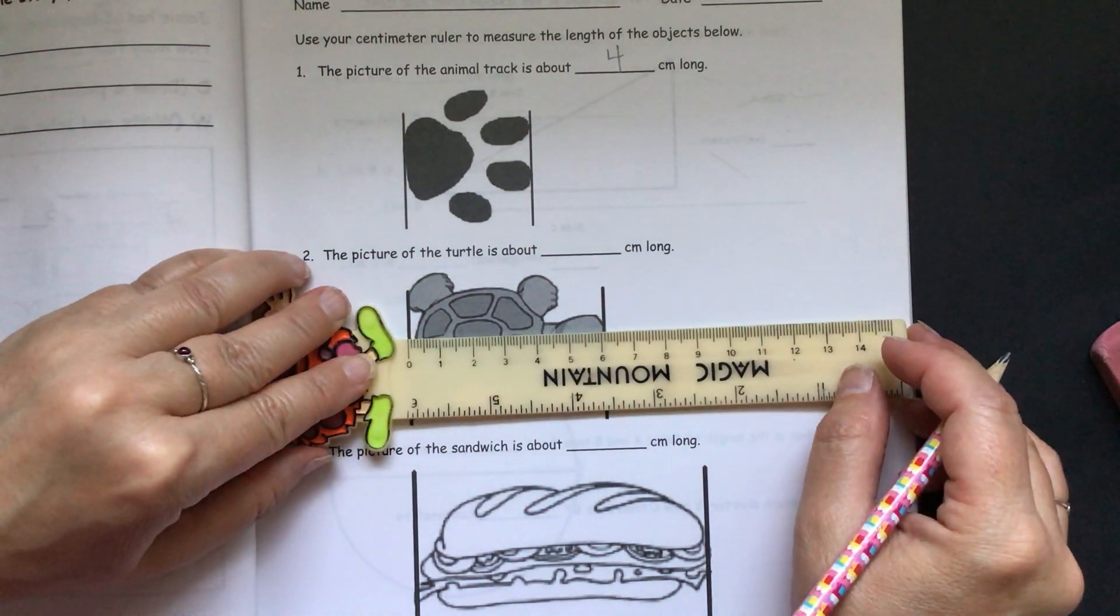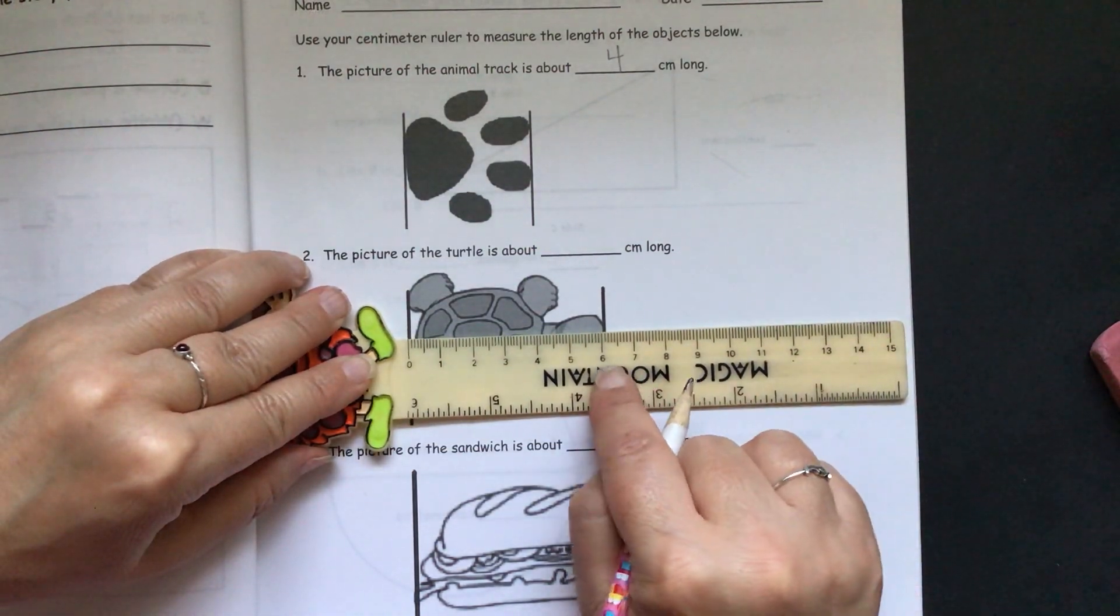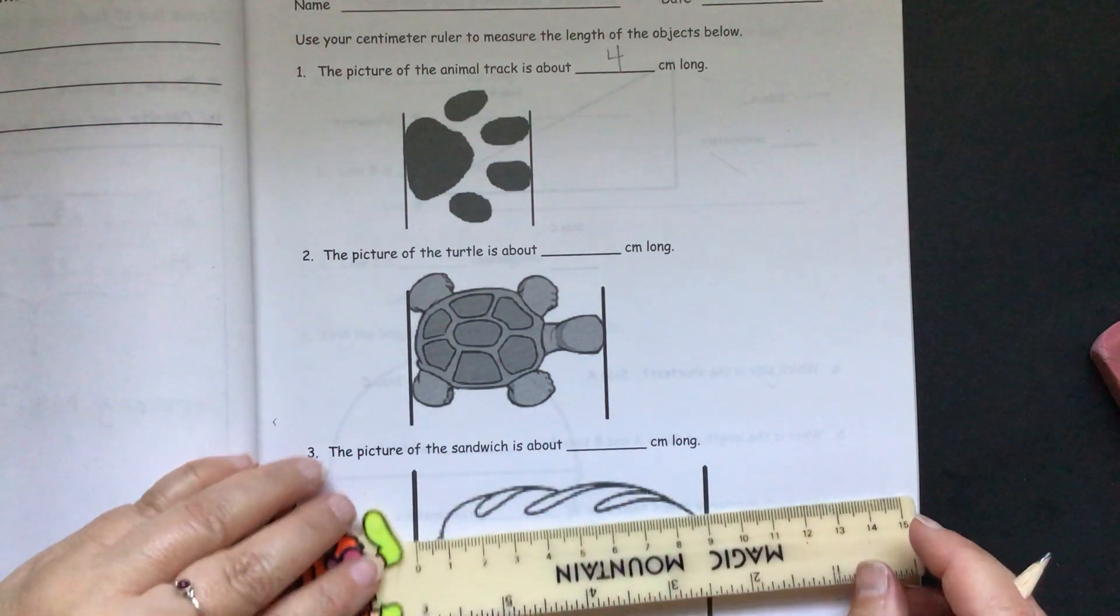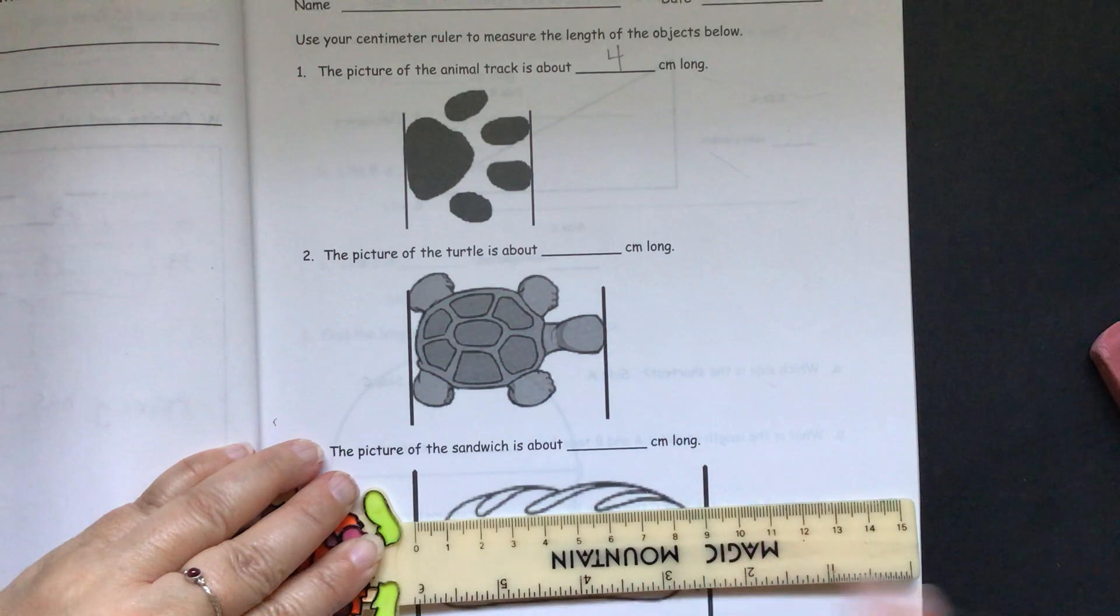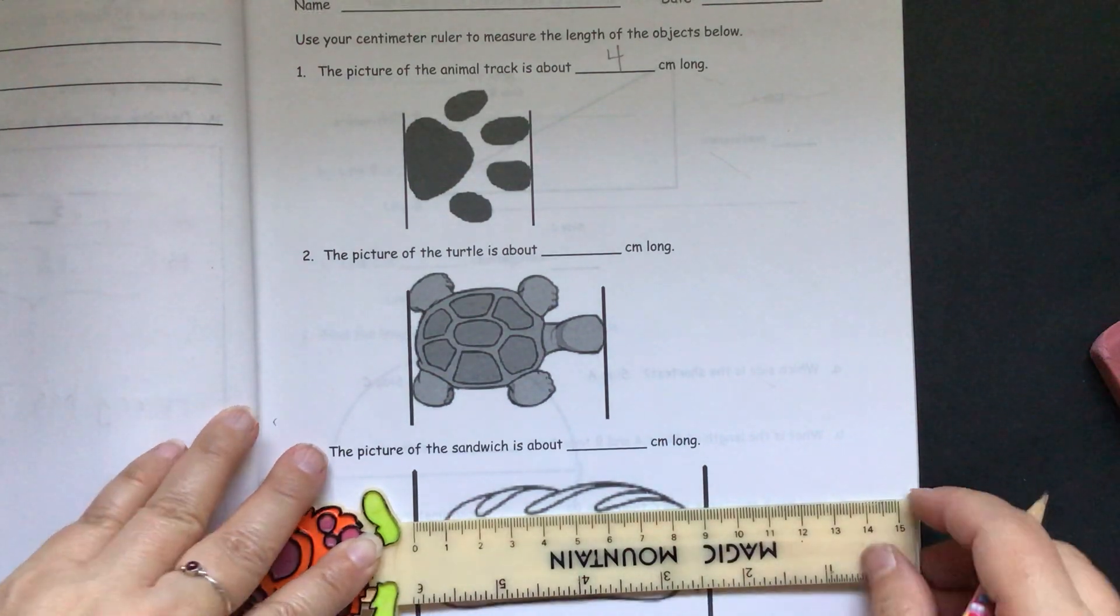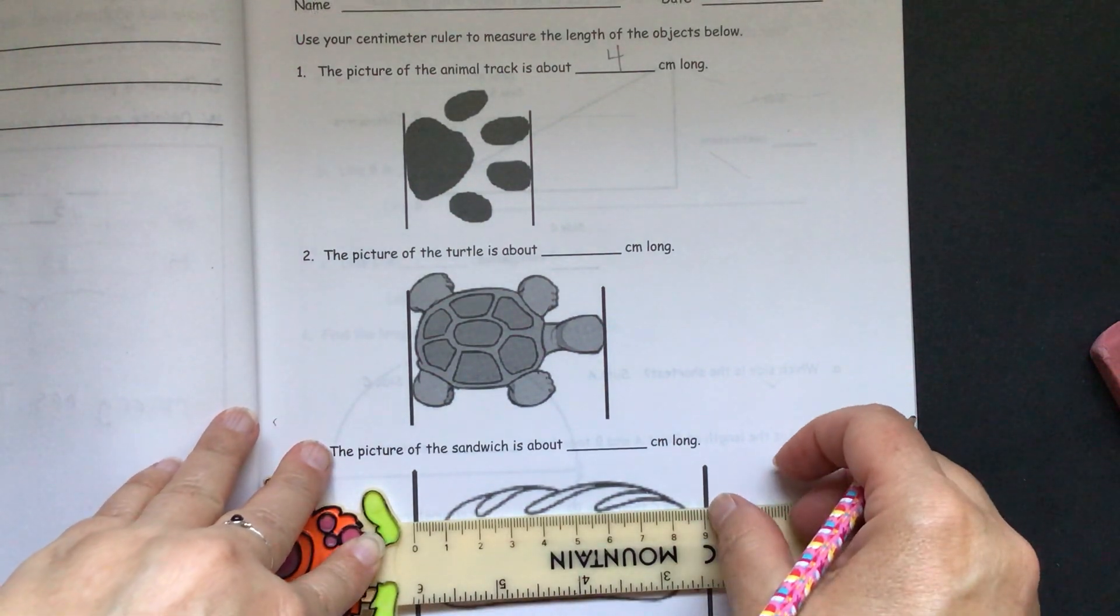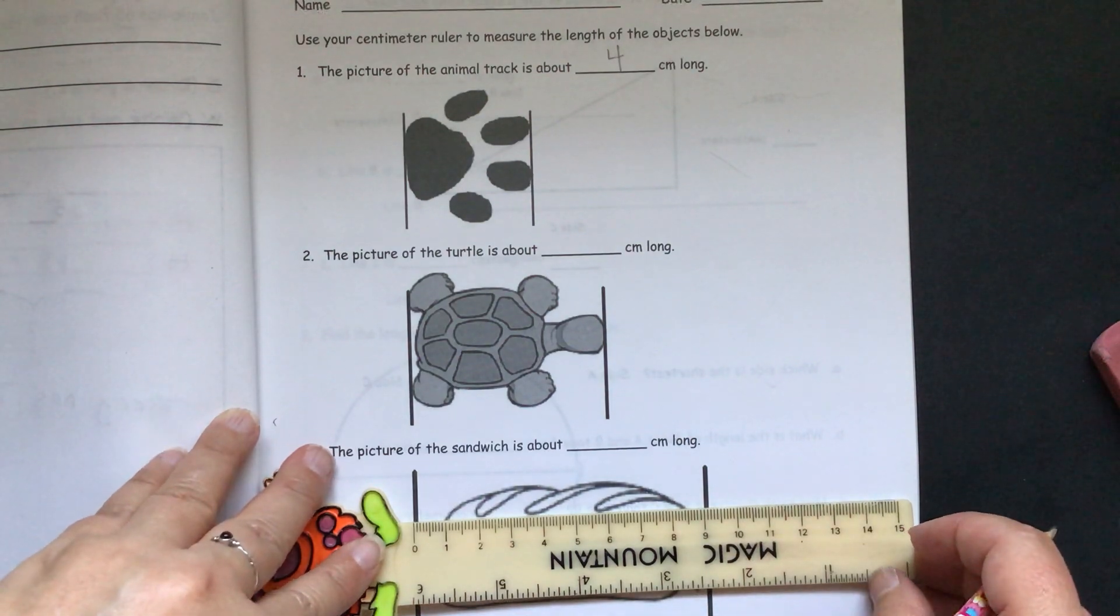And you could do that with the turtle. You can see where that is. And the sandwich. You can see how that lines up. And go straight from that line down to see the number that it equals.